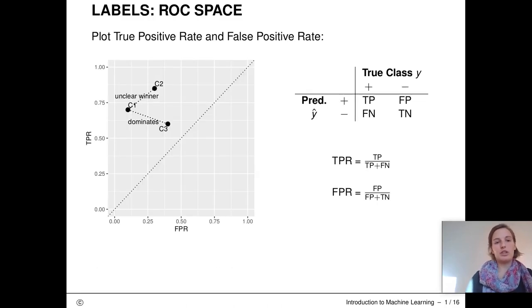In our first unit on ROC analysis, I introduced various metrics for the evaluation of binary classification systems with imbalanced class labels. Among those were the true positive rate, which was the percentage from the positive class that we also predicted as being positive, and the false positive rate, which is the percentage of negative class that we erroneously predict as being positive.